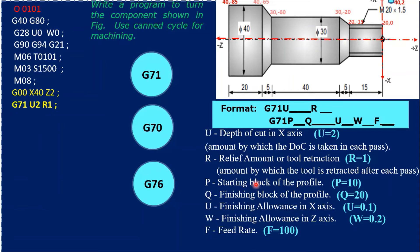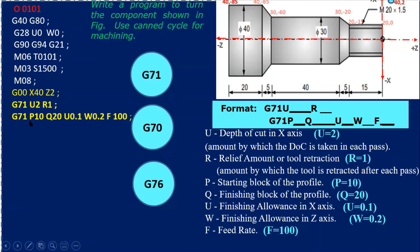Now writing the actual G71 block using the same format: G71 U2 R1. Then G71 P10 Q20 U0.1 W0.2 F100. Remember, if you take P10 here, you also have to put N10 in the profile block. If you put F100 here, you also have to put F100 in the profile. These are very important parameters.